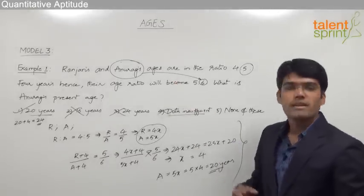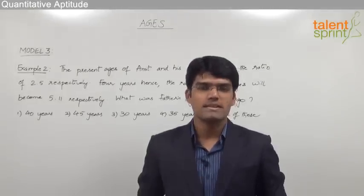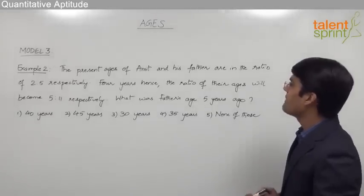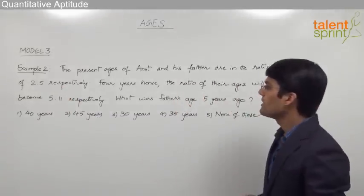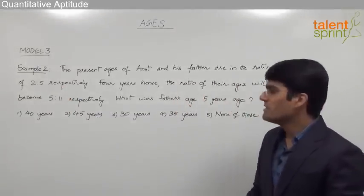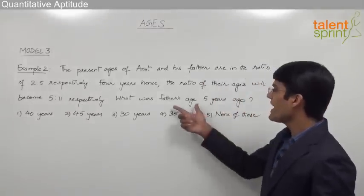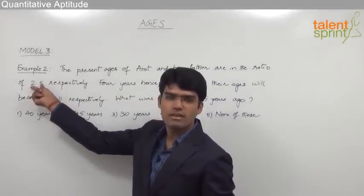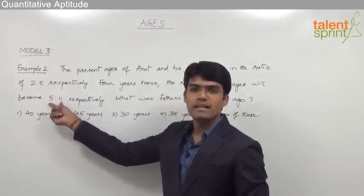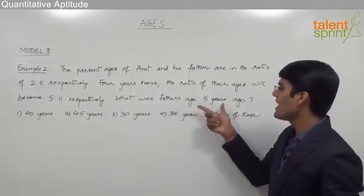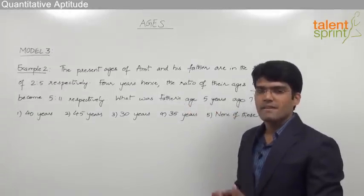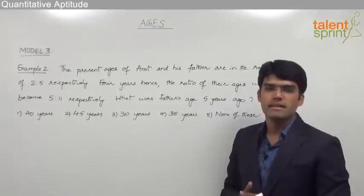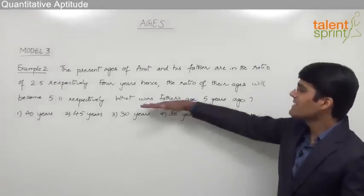Let us now discuss another example. The question is: present ages of Amit and his father are in the ratio 2 is to 5. Four years hence, the ratio of their ages will become 5 is to 11. What was the father's age 5 years ago? We have two ratios — the present ages ratio and the ratio four years hence — and we need to find the father's age 5 years ago. Let us avoid writing all steps and eliminate the wrong options directly.